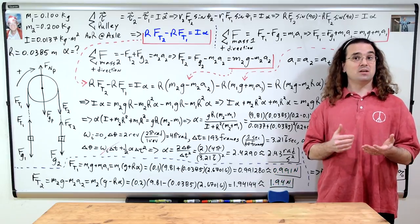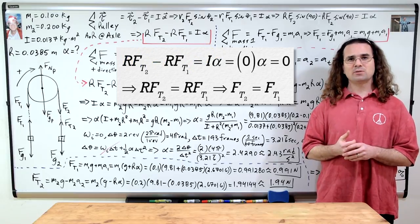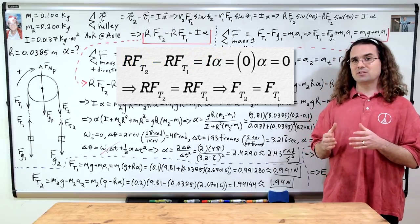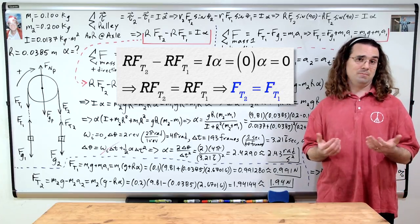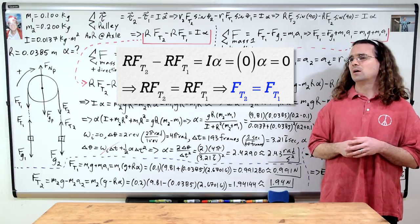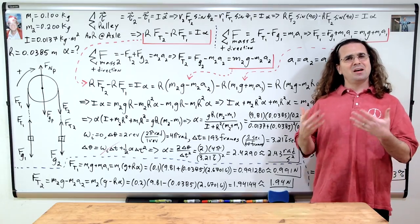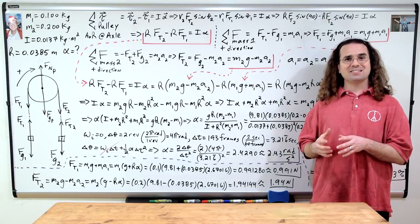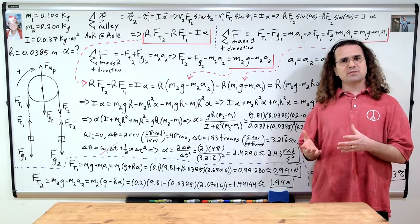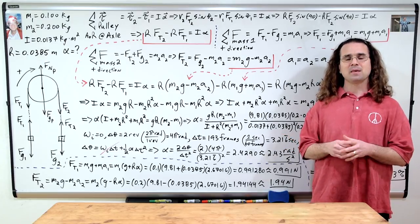The tensions are unequal because the pulley has mass and therefore rotational inertia, requiring a net torque to angularly accelerate it. If the pulley had negligible mass and therefore negligible rotational inertia, the net torque equation would show the two tension forces would be equal. When we say the pulley has negligible friction, we mean the axle has negligible friction — the surface of the pulley still has friction to interact with the string.